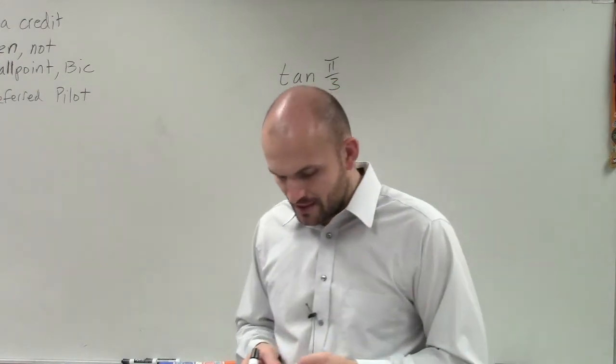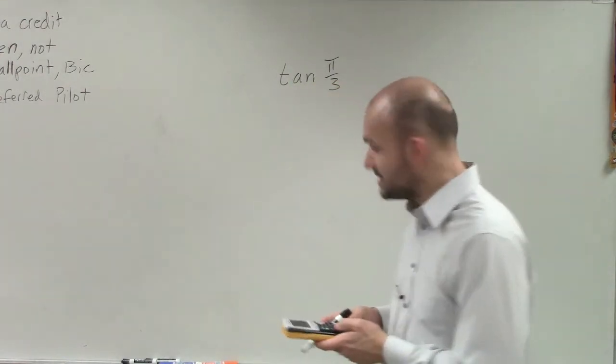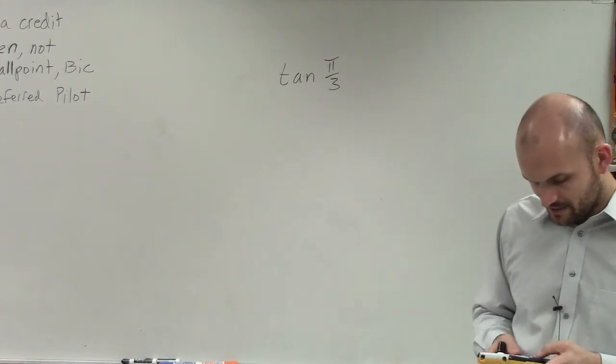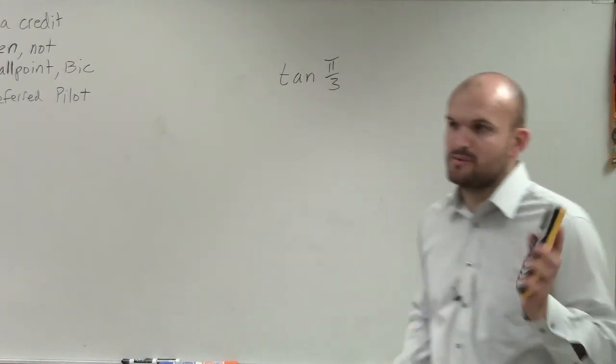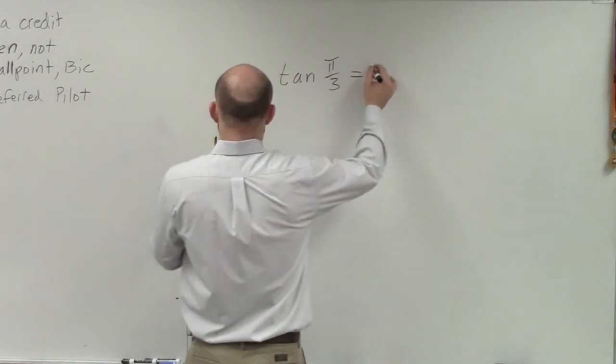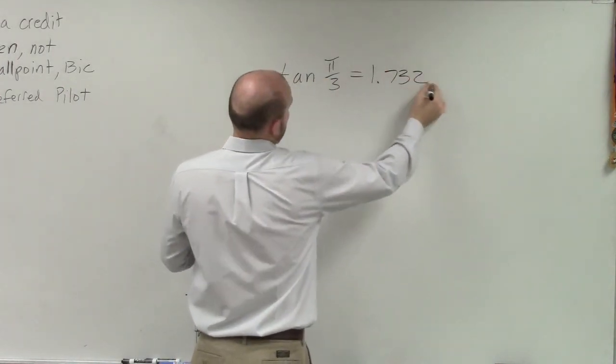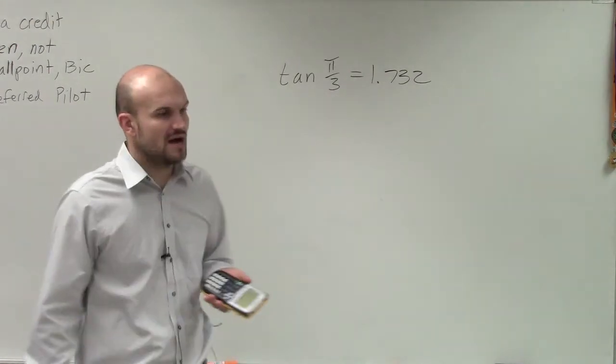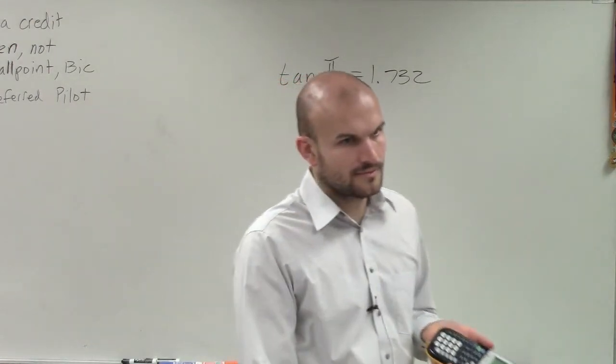And then all I'm simply going to do is type in tan of pi divided by 3. And that is going to be my decimal version of that answer, which is 1.732 as I round it to the thousandths.